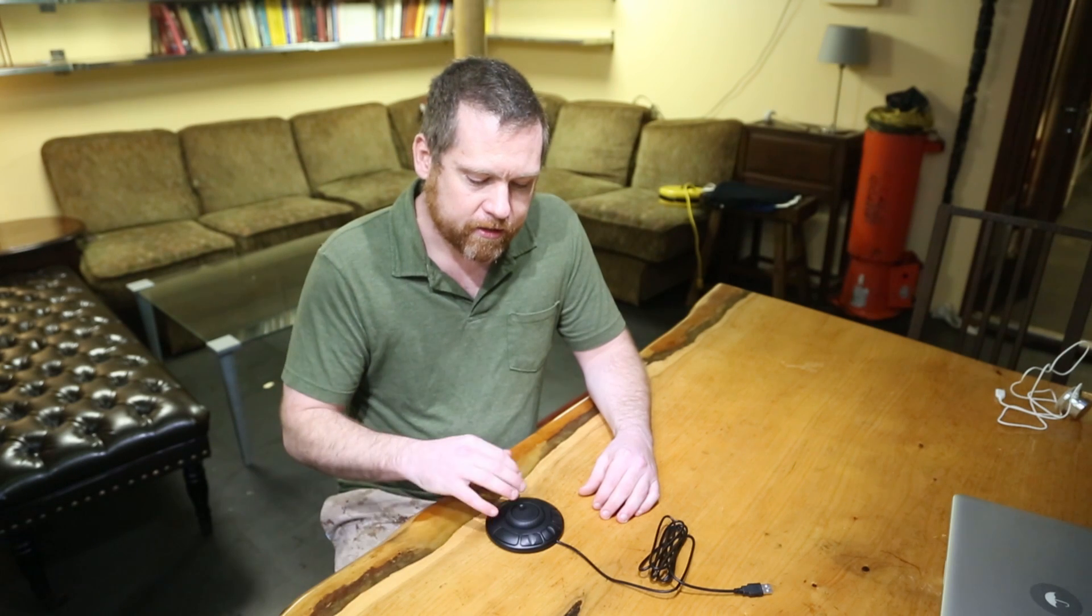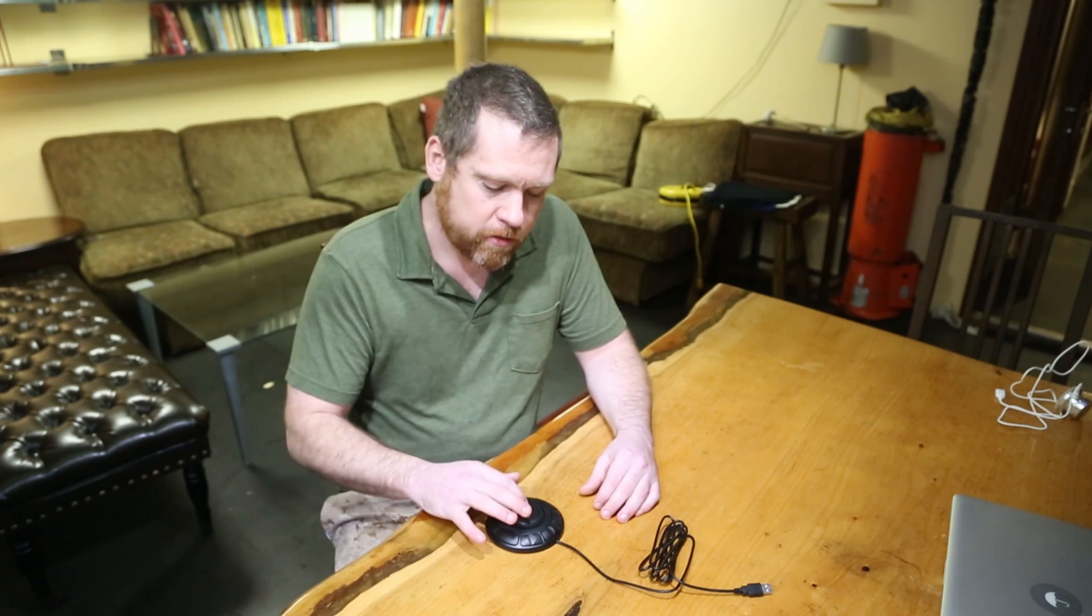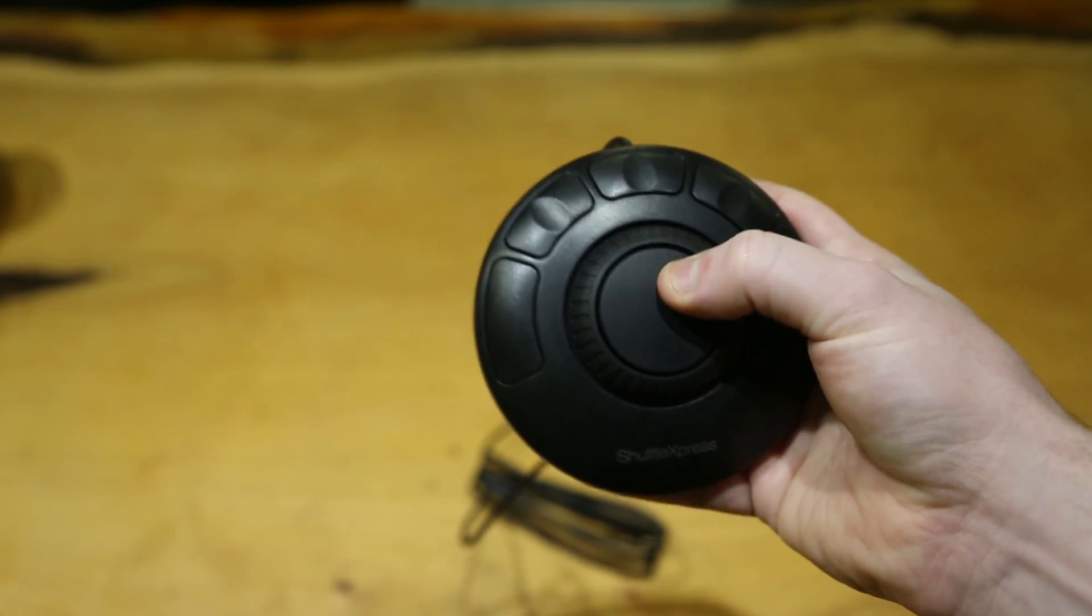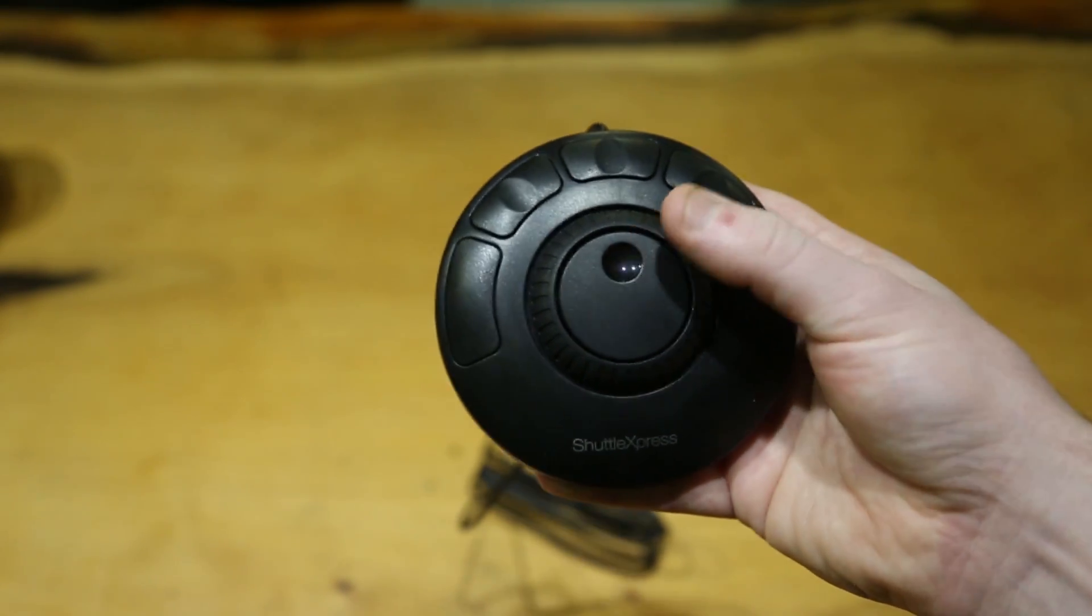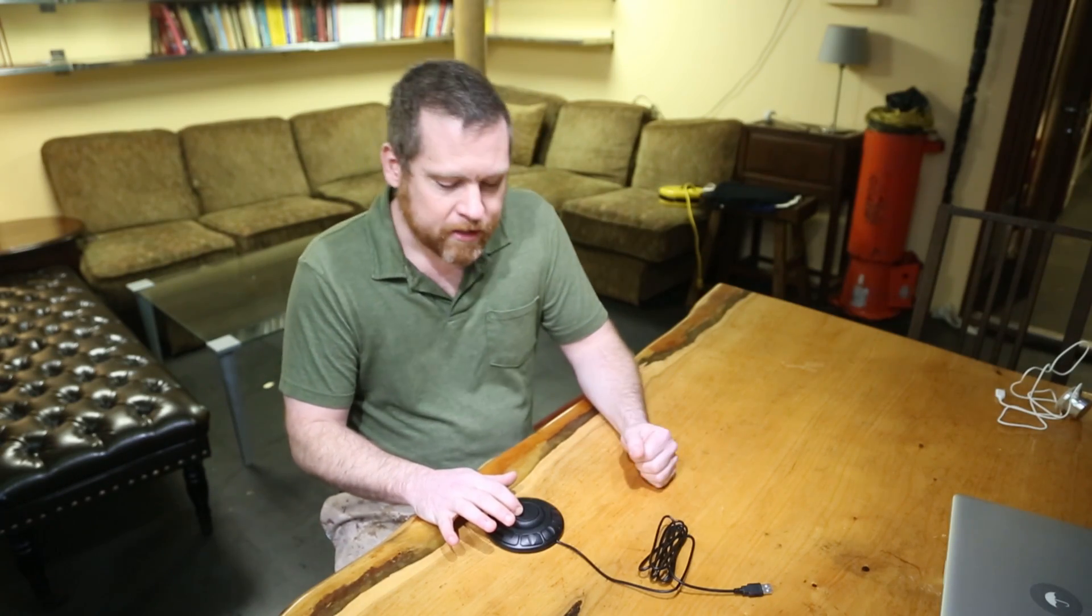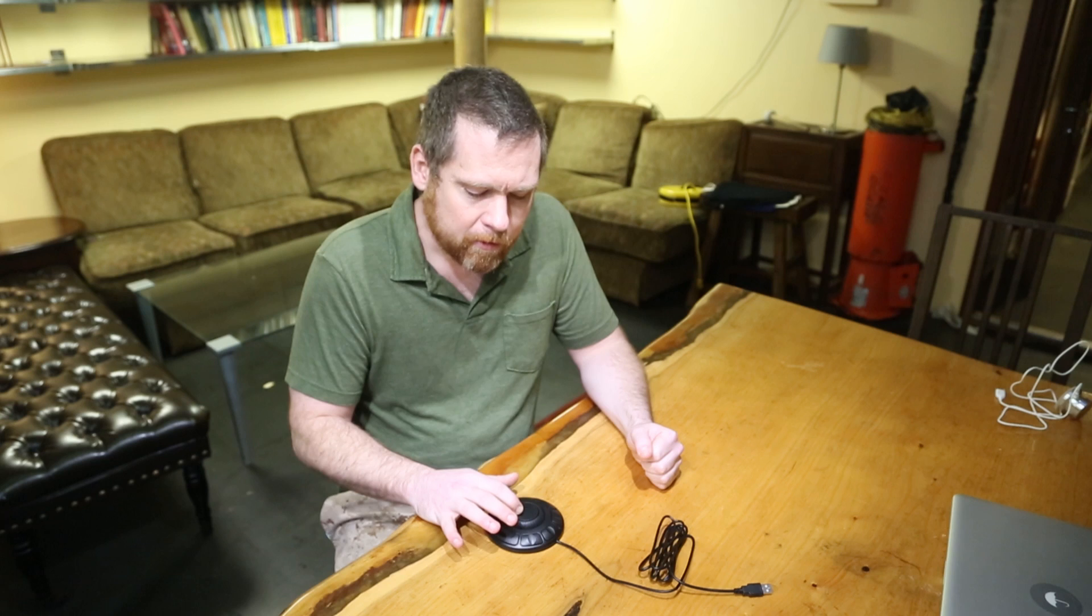So right away you notice it has more buttons than wheels. It has two wheels. The inner wheel you can use to advance the video by frame by frame, just like the other ones. But it's just more reliable.